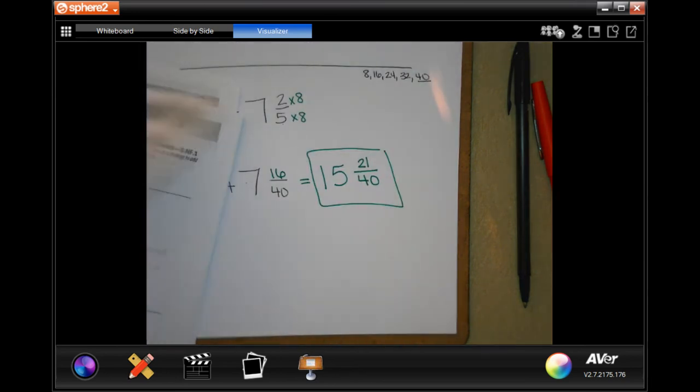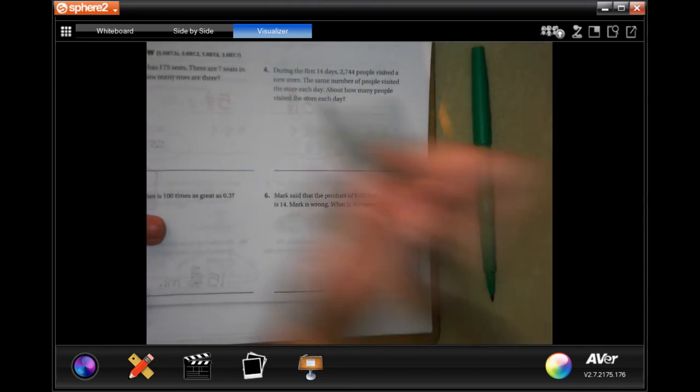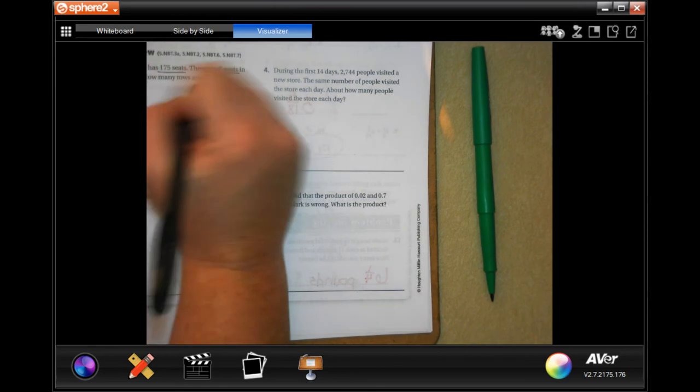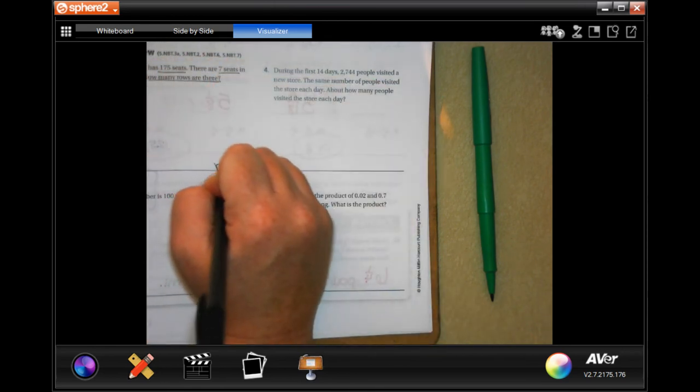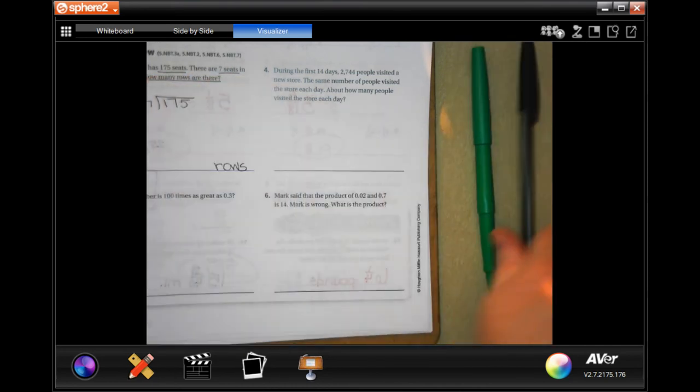All right, guys. We're going to go to the back. You guys are going to do the lesson check, just like always, and we're going to go ahead and do this on a little view. So the theater has 175 seats. There's 7 seats in each row. How many rows are there? So whatever our answer is, it's going to be in rows. 175. Divide that by 7.